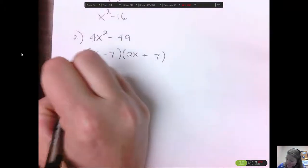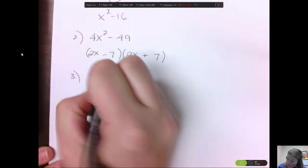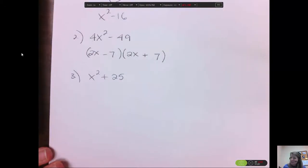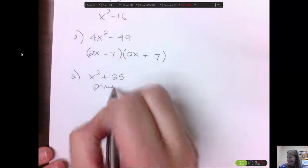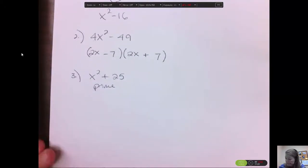So if we see something like this, x squared plus 25, they're kind of trying to trick you. You cannot do this one, and it is prime. There's no way to get the zero in the middle.